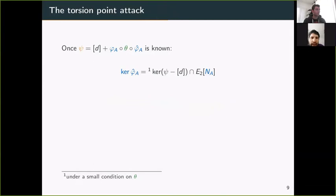Once ψ is known, there's an easy way of recomputing the dual of φA: intersecting the kernel of ψ - d with the Na-torsion of E₀, modulo some small conditions on θ.